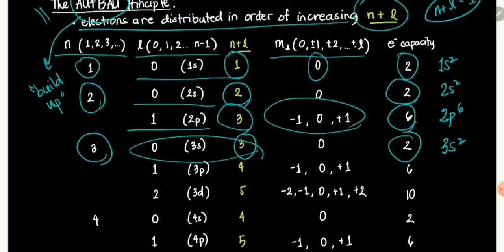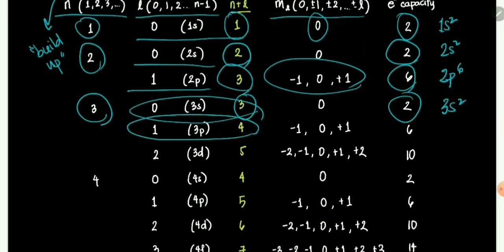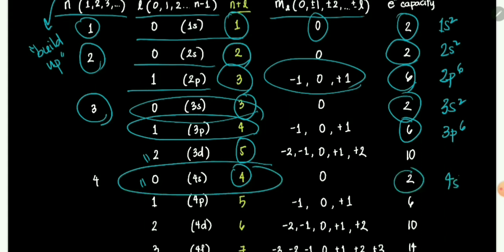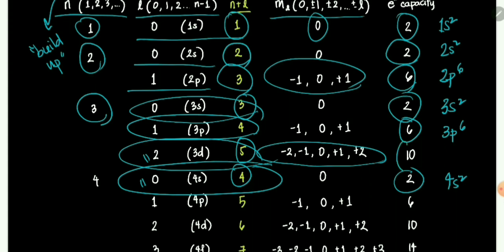Then we have 3p. 3p has an n plus l of 4, so maximum of 6 electrons — 3p6. Next, 3d is 5 in terms of n plus l, and 4s is 4, so 4s comes first. 4s has a maximum of 2 electrons — 4s2. Then comes 3d, which has n plus l equals 5. It has 5 magnetic quantum numbers: negative 2, negative 1, 0, plus 1, and plus 2. So it has a maximum of 10 electrons — 3d10.